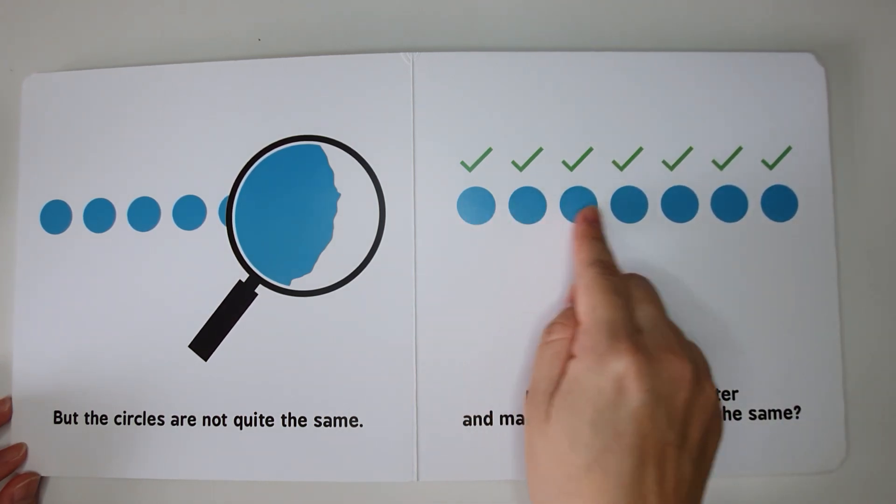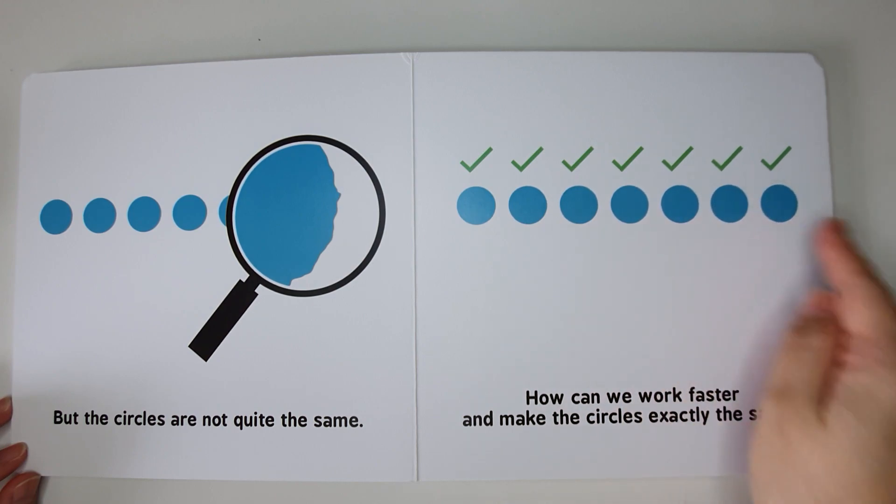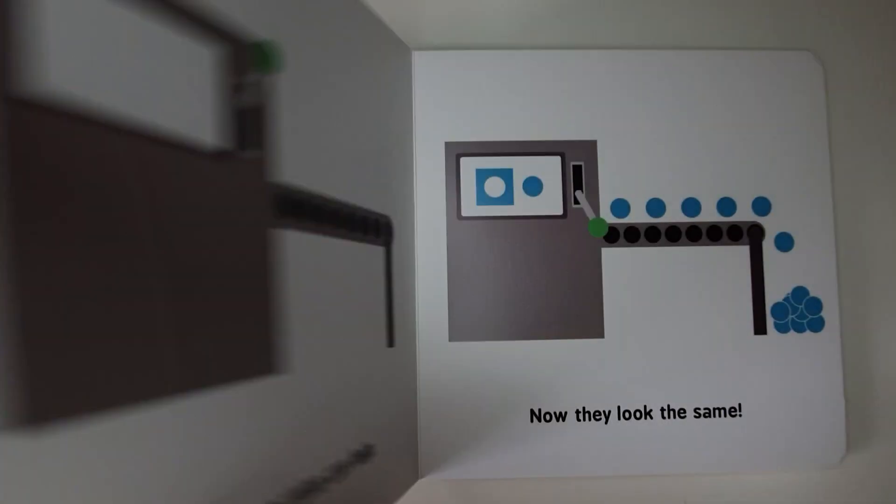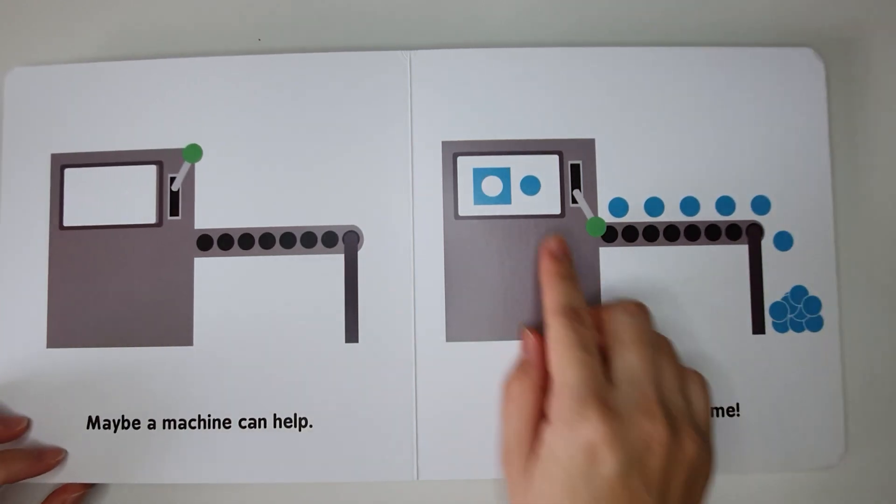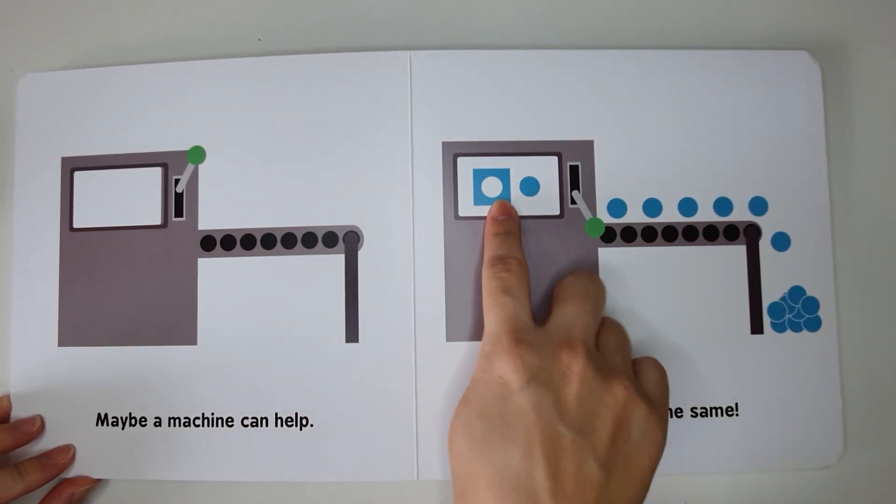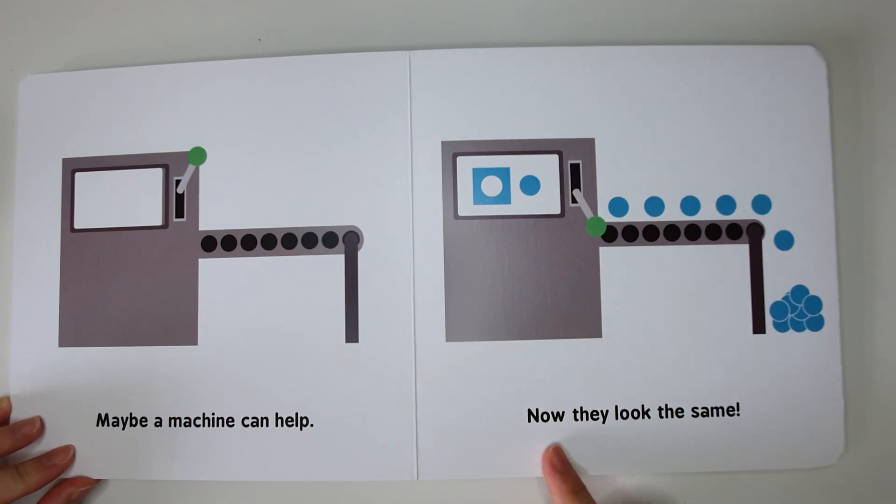Like this: one, two, three, four, five, six, seven circles. Maybe a machine can help. The machine will be able to cut the circle from the square. Now, they look the same.